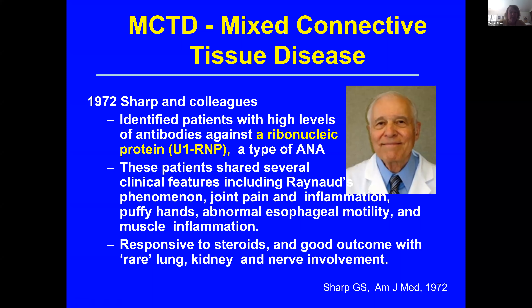This was a type of ANA. He identified a group of patients that he thought was unique, separate from scleroderma, separate from lupus, and he called them mixed connective tissue disease. This group of patients had multiple features including Raynaud's, joint pain and inflammation, arthritis, lots of puffiness in their fingers, esophageal dysmotility, and muscle inflammation.